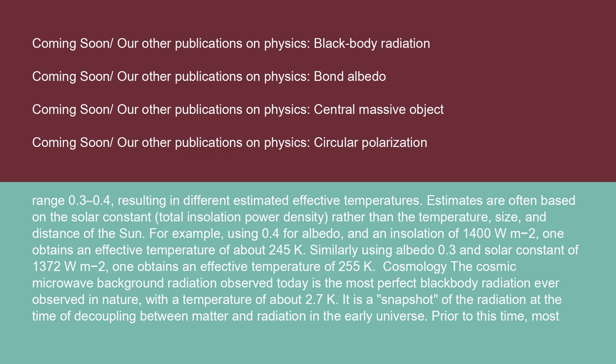For example, using 0.4 for albedo and an insolation of 1,400 W·m⁻², one obtains an effective temperature of about 245 K. Similarly, using albedo 0.3 and a solar constant of 1,372 W·m⁻², one obtains an effective temperature of 255 K.